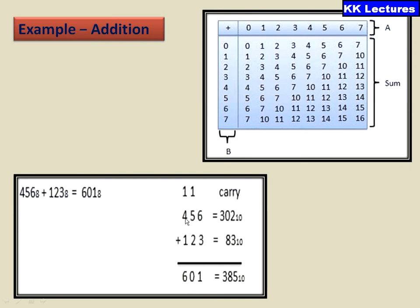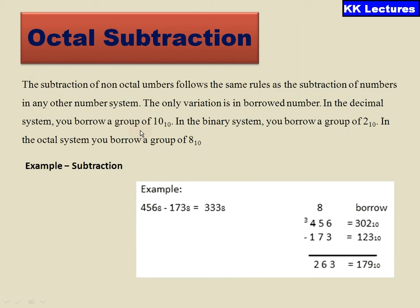So 0 here and carry 1. So 4 plus 1 is 5, 5 plus again 1 is 6. So I am getting 601 as the addition.